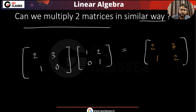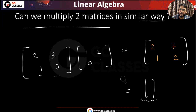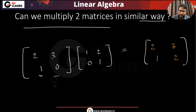Now, can we do this in the similar way — can we say, just as in matrix-vector multiplication the result is a linear combination of columns, can I say a similar thing here? The answer is yes. It's just that we have multiple vectors on the right-hand side — not just one vector but multiple vectors, which are [2,1] and [7,2]. So I can say that [2,1] is also a linear combination of these columns, and [7,2] is also a linear combination of these columns.